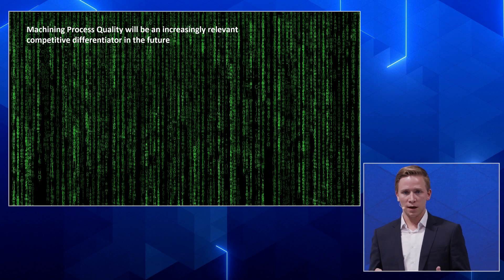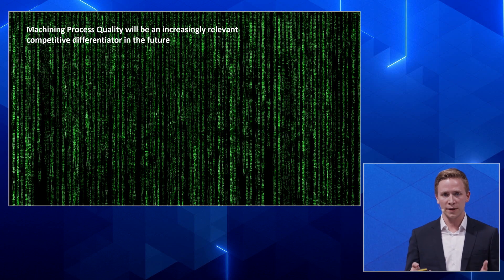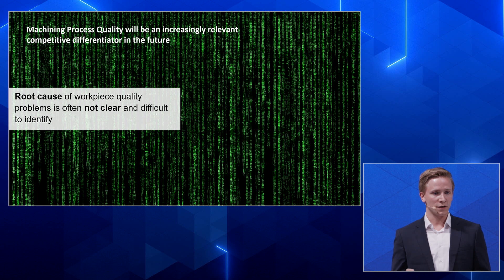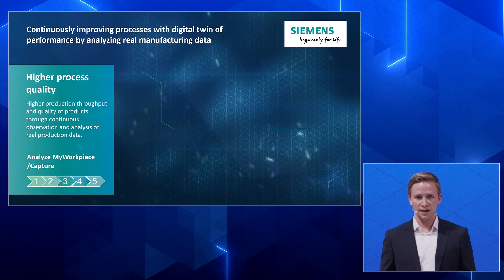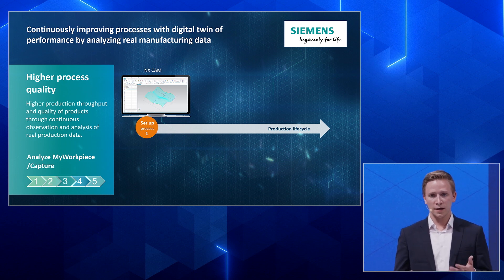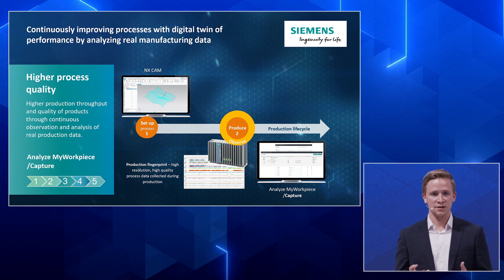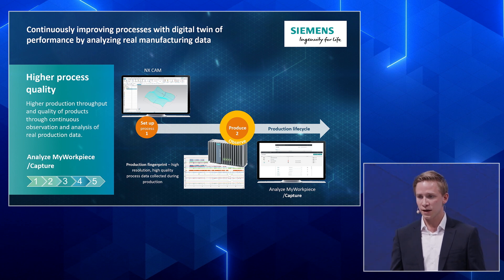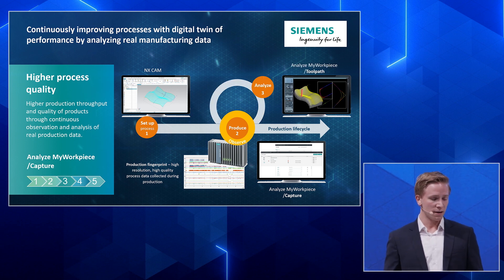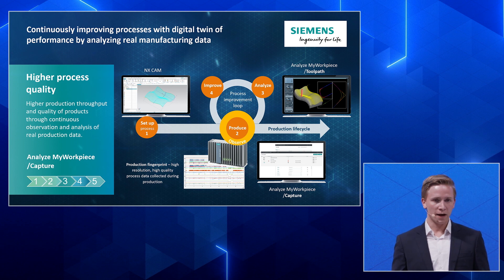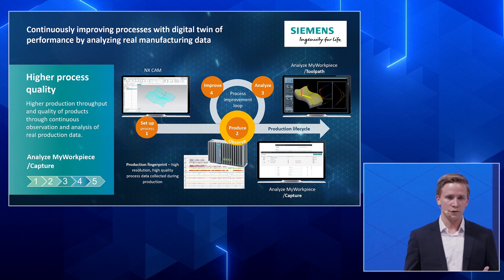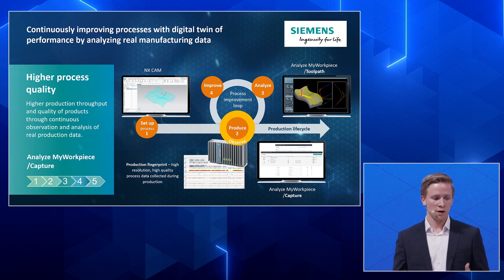Concerning process quality, workpiece quality will be an increasingly important competitive factor. We need to find the root cause of quality problems. For this, we developed a closed-loop process to improve workpiece quality based on real production data. First, you create your workpiece, then produce it while capturing real production data with Analyze My Workpiece Capture — you decide which variables to examine. Then you analyze them with Analyze My Workpiece Toolpath, making an as-is and to-be comparison to find differences in the model, and improve it regularly over the lifecycle of the workpiece.